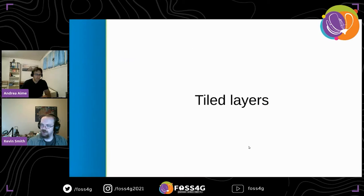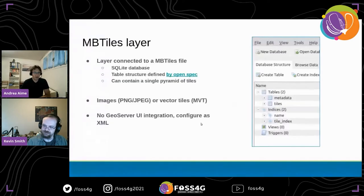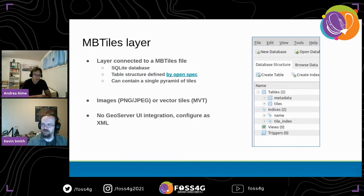In terms of tiled layers, we recently added support for MBTiles layers. If you have an MBTiles database — which is a SQLite database with a table structure defined by an open spec — each MBTiles SQLite file contains one pyramid of tiles, which can be images like PNGs or JPEGs, maybe a mix of both, but also vector tiles.